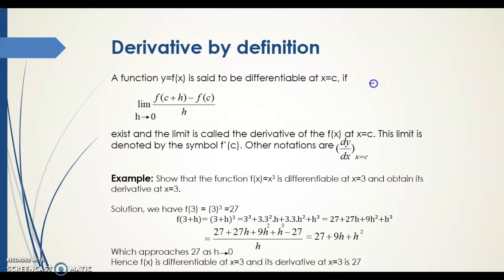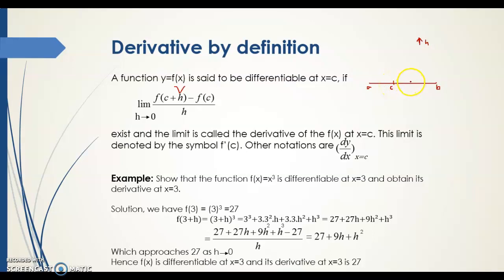To explain this numerically, suppose there is an interval a and b, and c is a point inside that interval. If we add h to c, it shifts c to the right-hand side of the interval, giving us the new point c plus h.